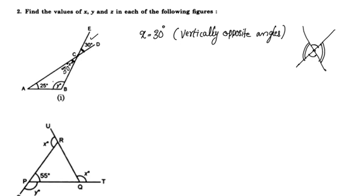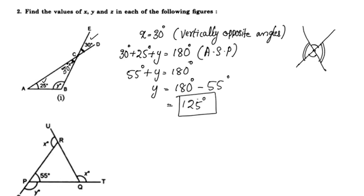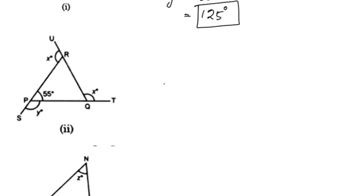y is equal to 30 degrees. Now for the next part, x and y equal 55 degrees. y plus 55 is equal to 180 degrees by linear pair, so 180 minus 55 is 125 degrees.